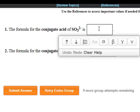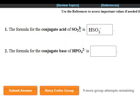So the conjugate acid for SO3 2 minus is HSO3 minus, because we're adding a positive 1 to that negative 2 to give us the minus 1.